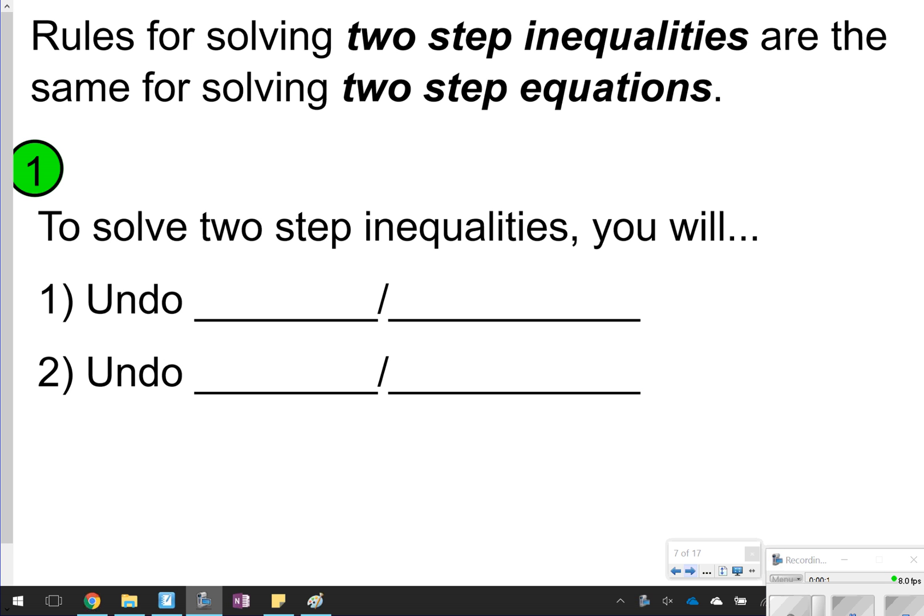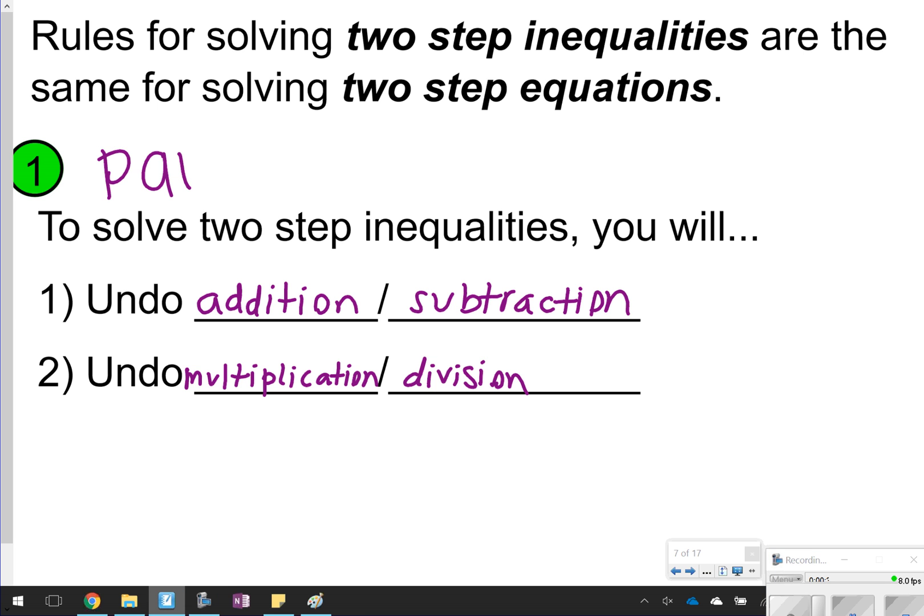The first thing we want to make sure we understand is, in order to solve two-step inequalities, it's the same rules for solving two-step equations. The first step, you will just focus on undoing addition and subtraction, and the second step, you will focus on undoing any multiplication or division. Go ahead and take time now to pause the video and write down steps one and two. Once you're done, click play to see how a few of these are done.